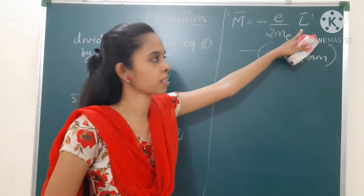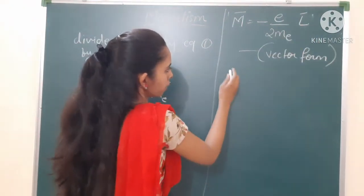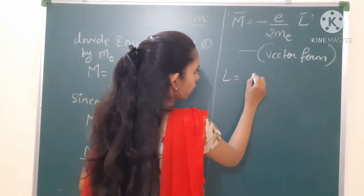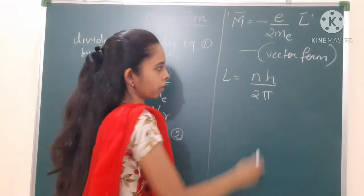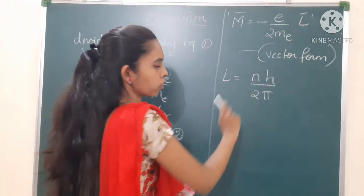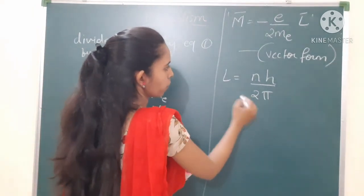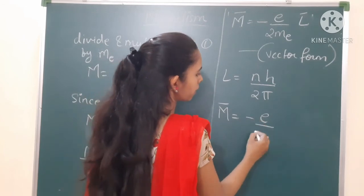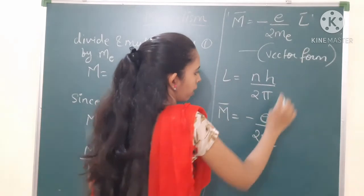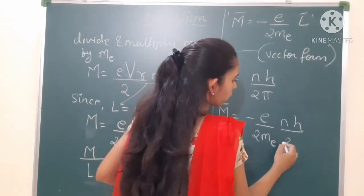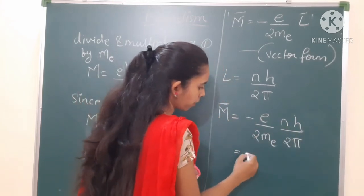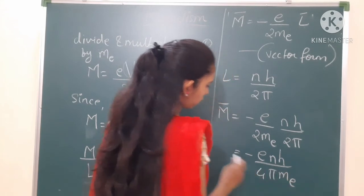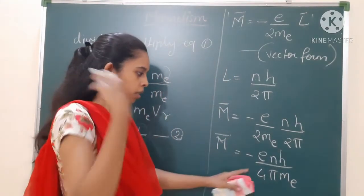According to Bohr's second postulate, angular momentum L is also equal to nh/2π, where n is the principal quantum number. If we introduce this into the equation, we get M = (e/2m)·(nh/2π). This is also called the gyromagnetic equation, in both vector and scalar form.